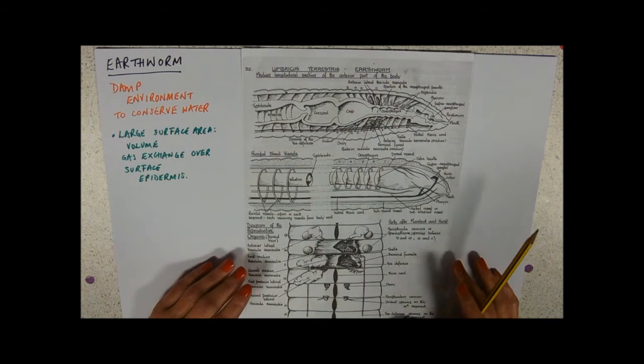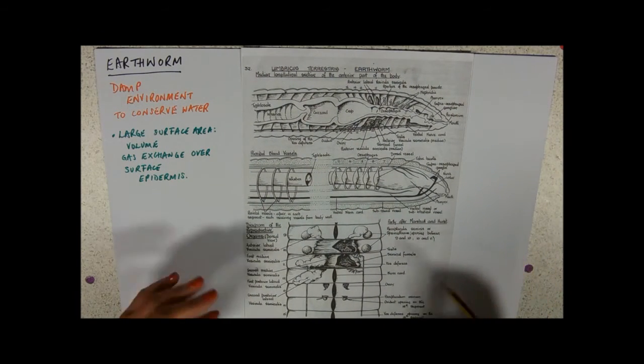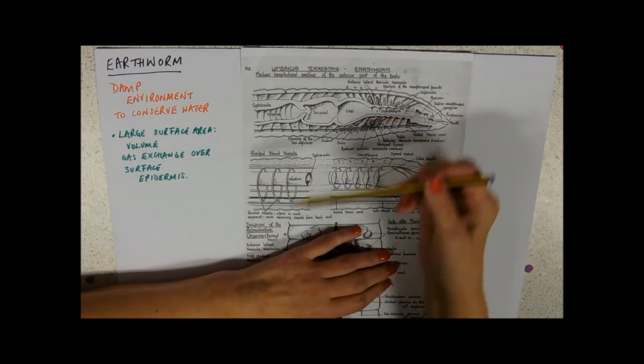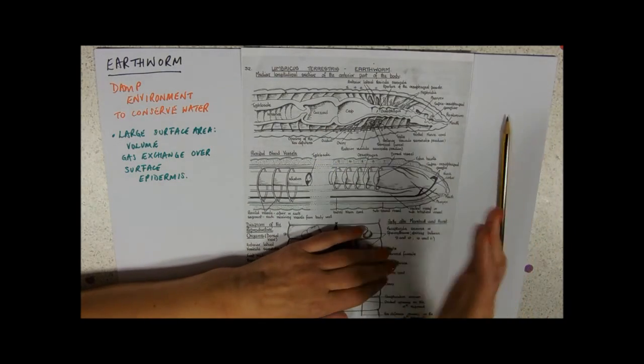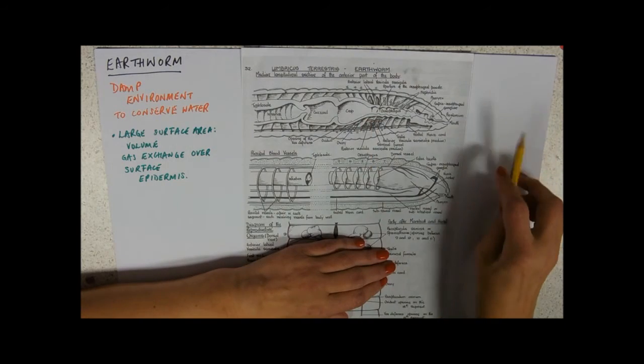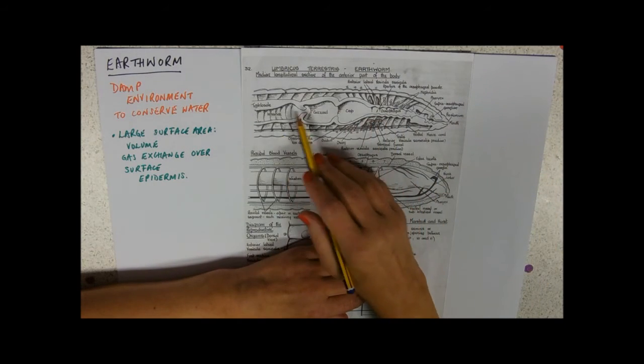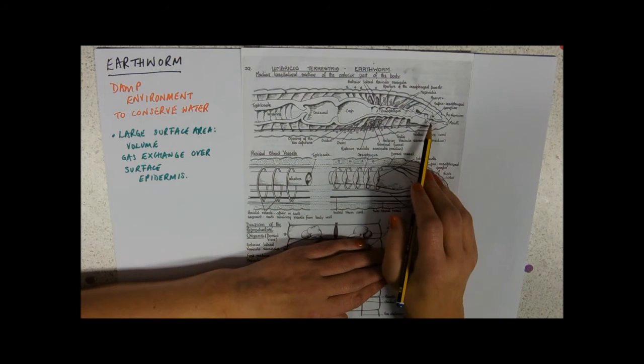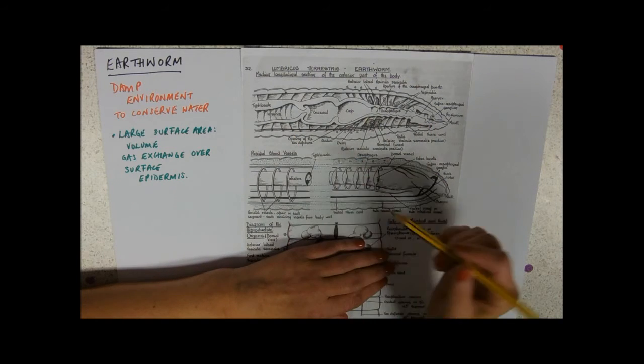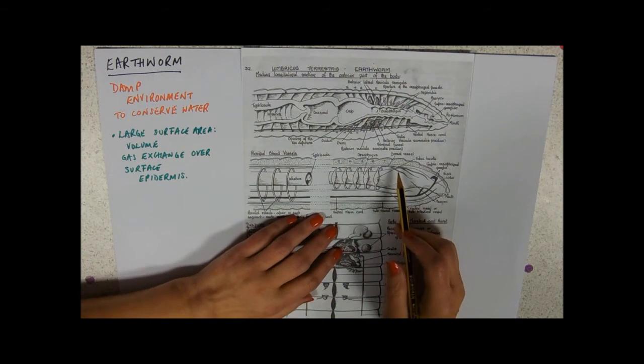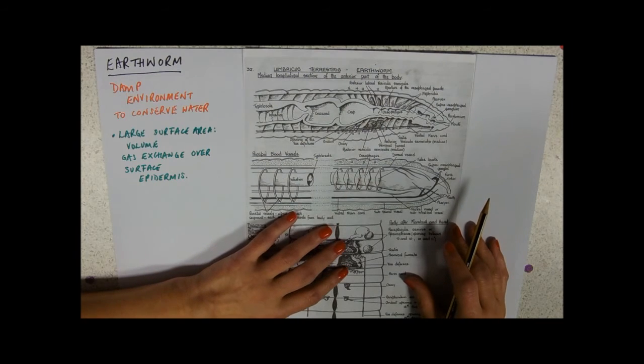Anyway, just to turn over, this is a kind of cross section through the middle of the worm—sort of as though they've chopped it that way and you're looking at the side. This is showing the anterior part of the body with the gut. But what we're interested in is adaptations for gas exchange.